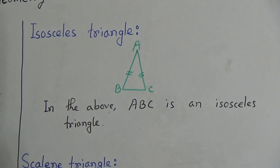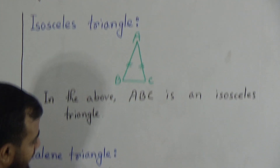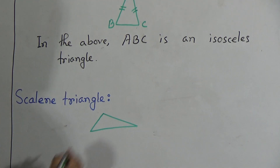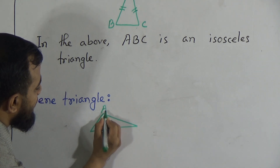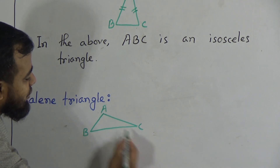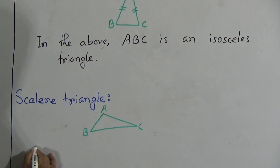And the last one, my dear students — the scalene triangle. Which triangle has no side equal to any other side? That means all sides are different. You must draw the triangle with a pencil, but you cannot use the ruler — draw freehand. Suppose the vertices are A, B, C, and AB is not equal to BC, and BC is not equal to AC, and AC is not equal to AB — no side is equal to any other. Then this is called a scalene triangle. You can write the description below.